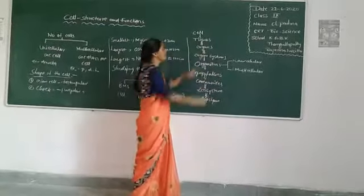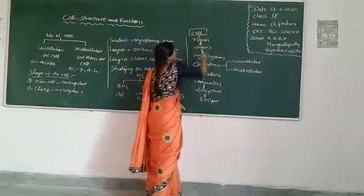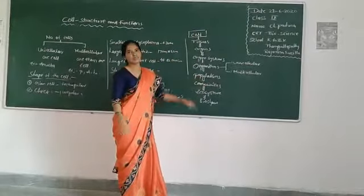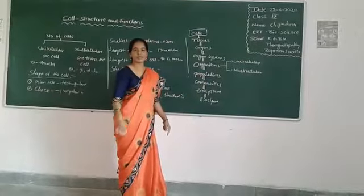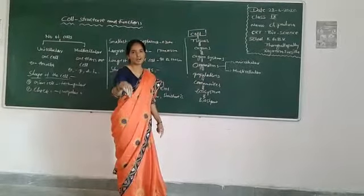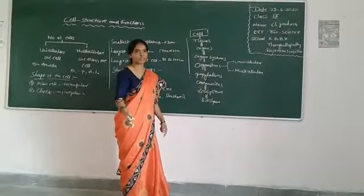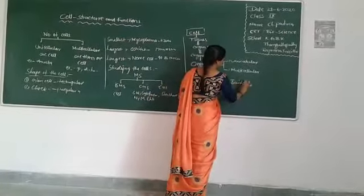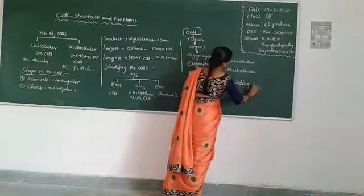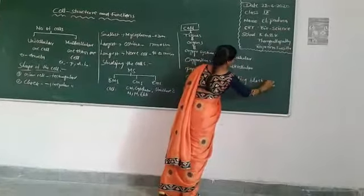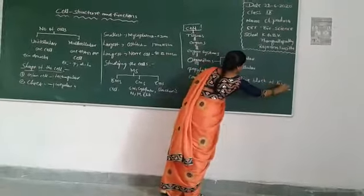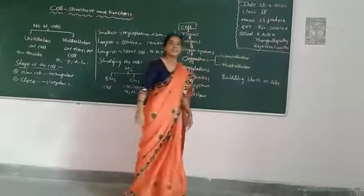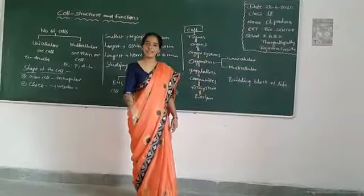Ecosystems form the biosphere. The starting point is the cell. If the cells present in the organism function properly, the body of the organism functions properly. Cell is the building block of life — that's why the cell is the structure and function of life.